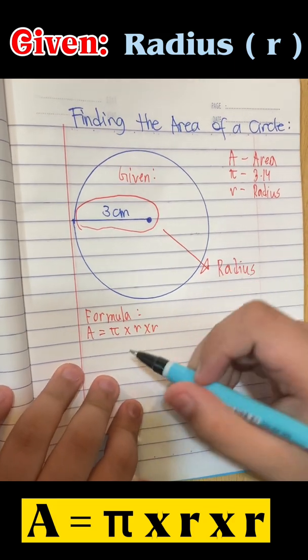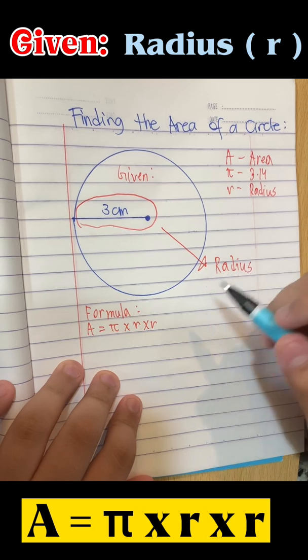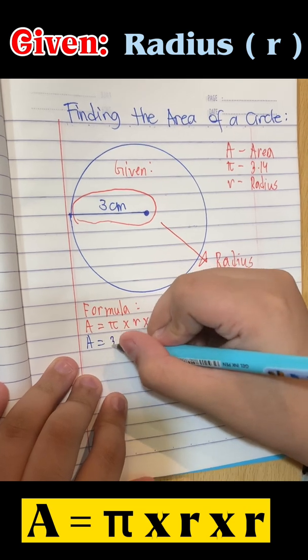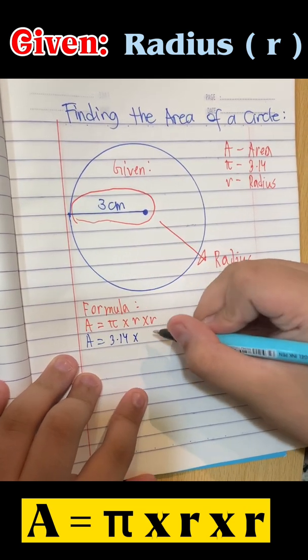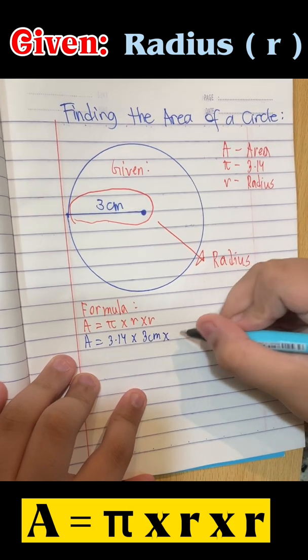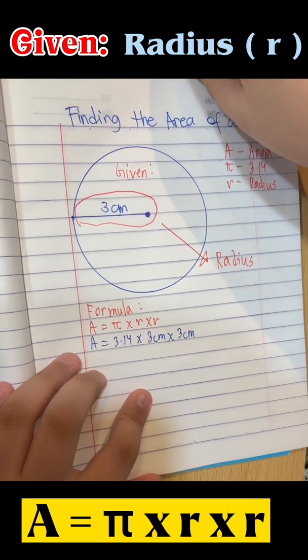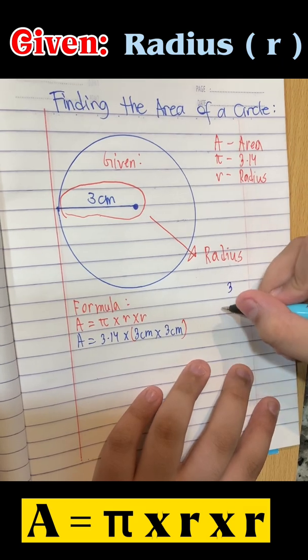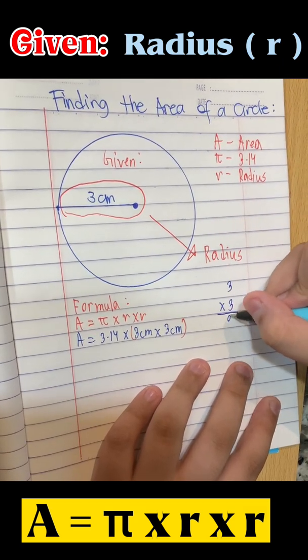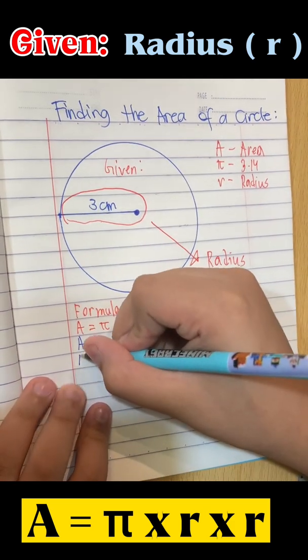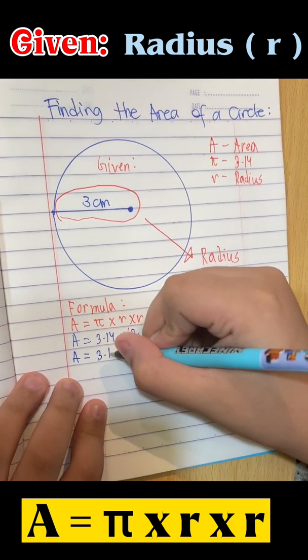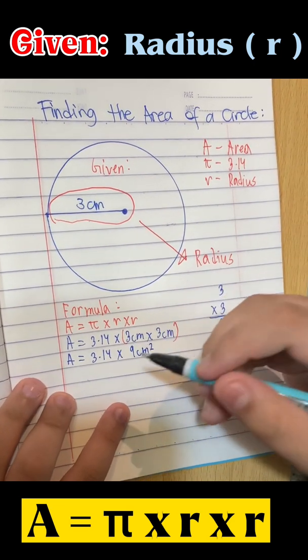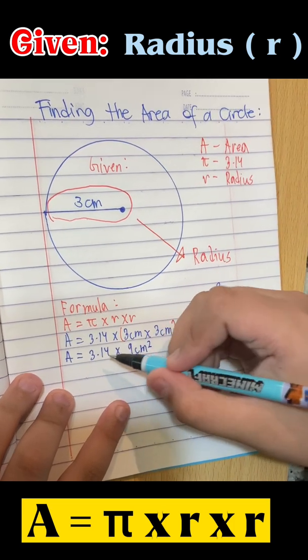Now, substitute the value of pi to 3.14, and substitute the value of R to 3 cm. A equals 3.14 times 3 cm times 3 cm. Now, multiply 3 cm by 3 cm. 3 times 3 equals 9. A equals 3.14 times 9 cm². Now, multiply 3.14 by 9 cm².